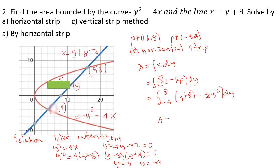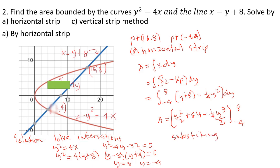Area equals [y²/2 + 8y − (1/4)(y³/3)] evaluated from −4 to 8. Substituting the limits gives an area equal to 72 square units.